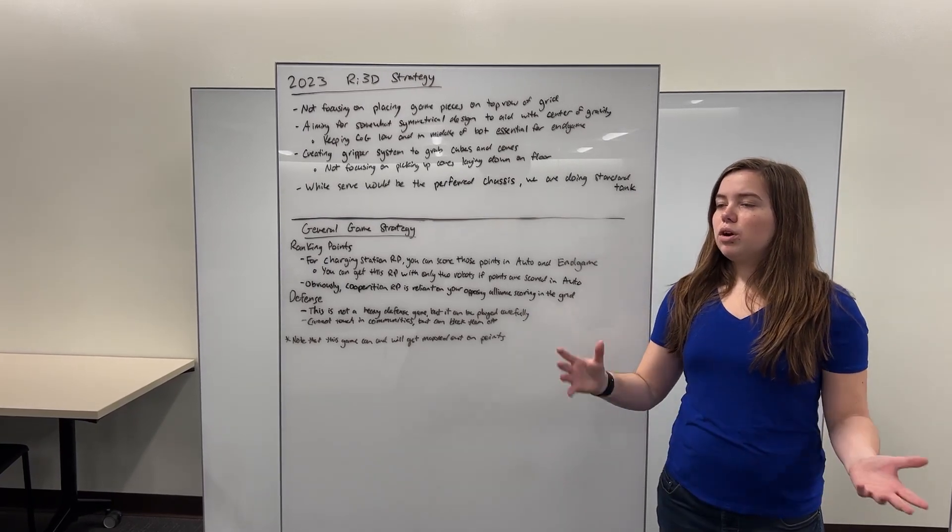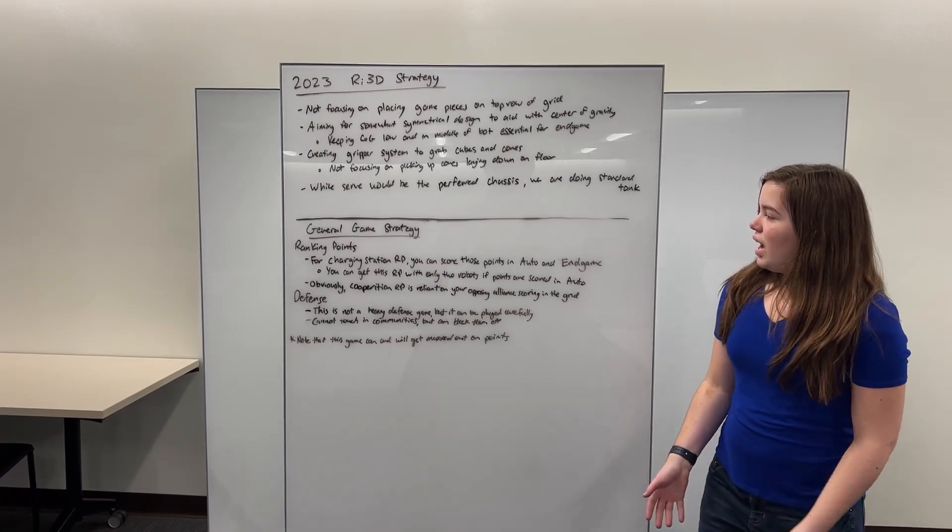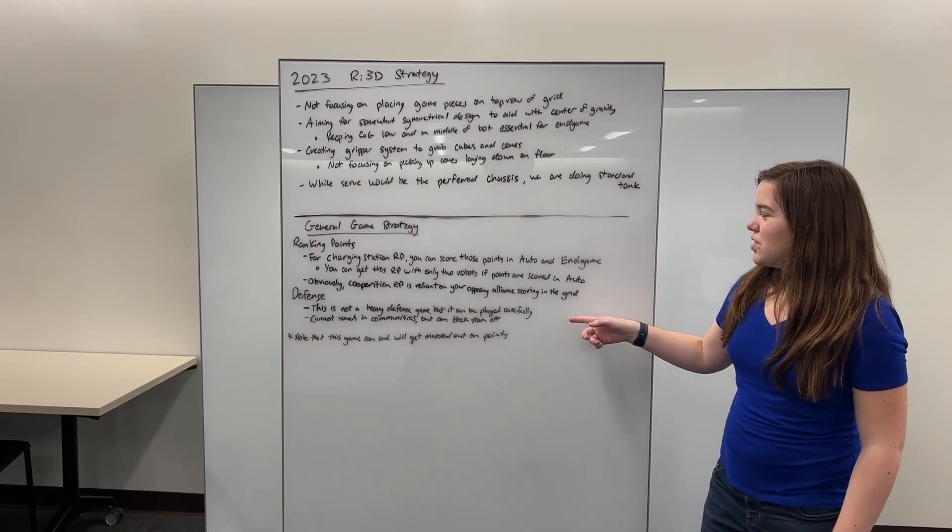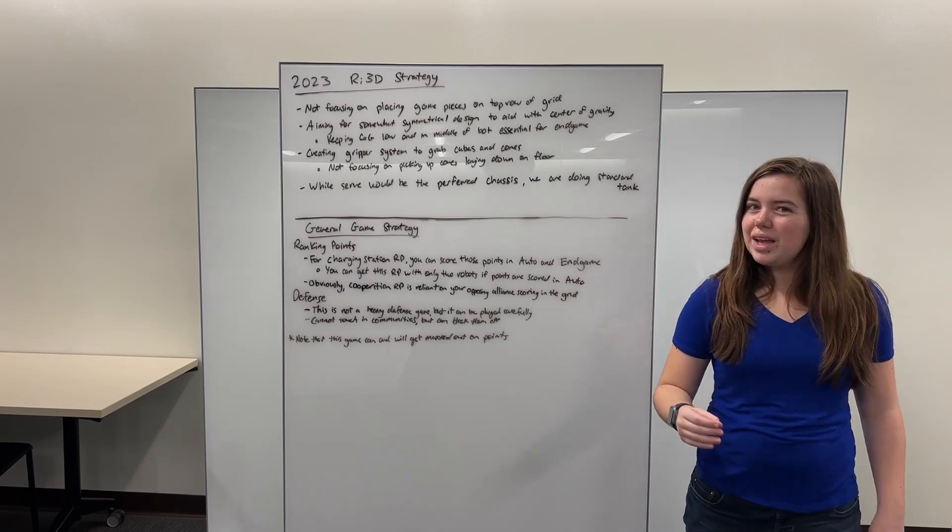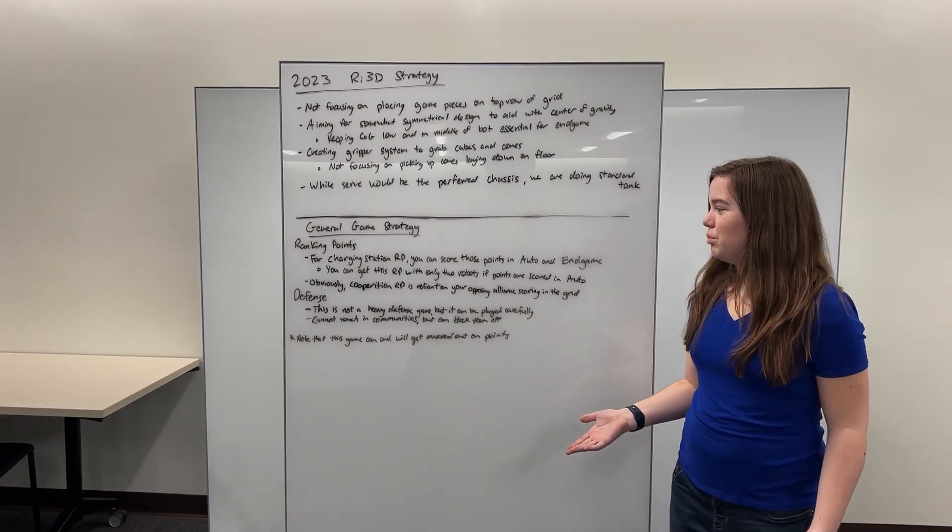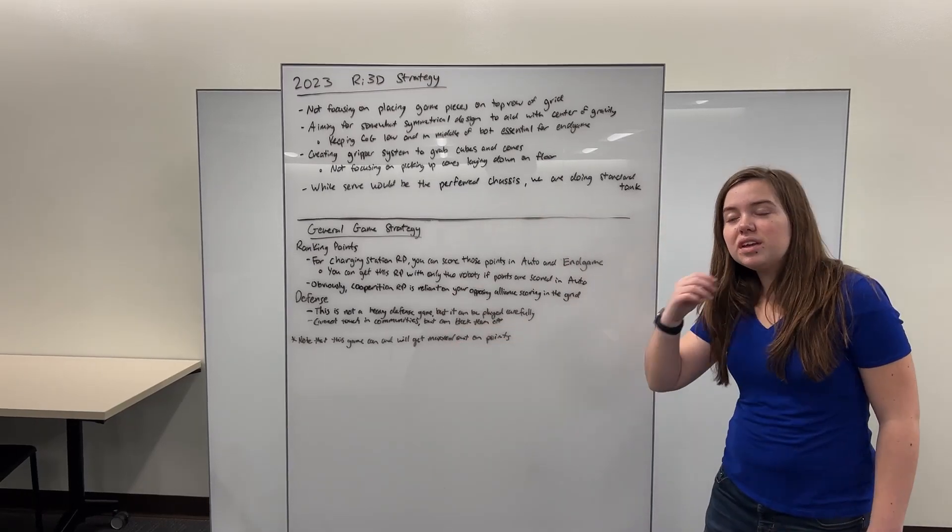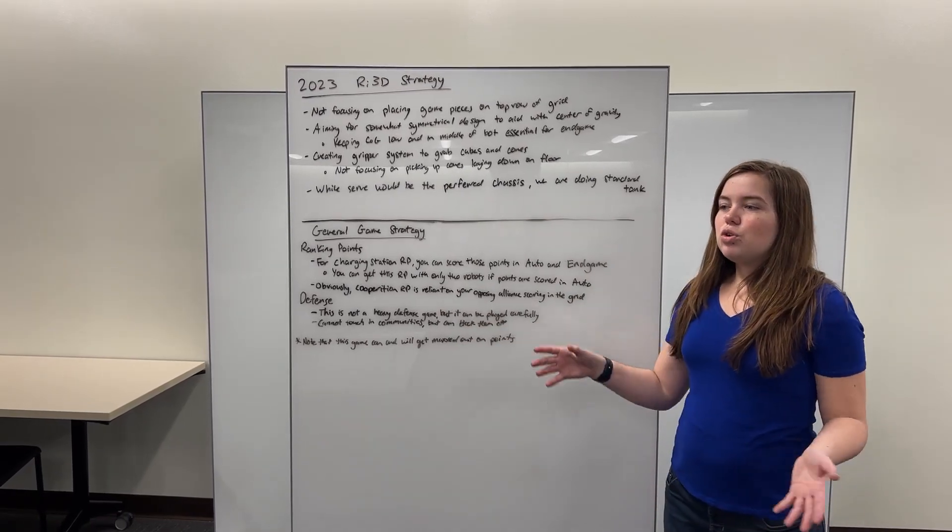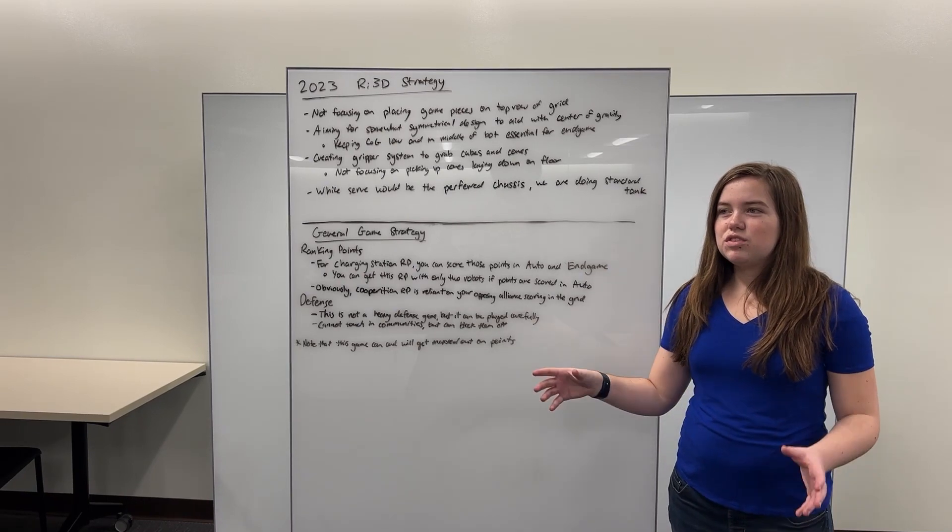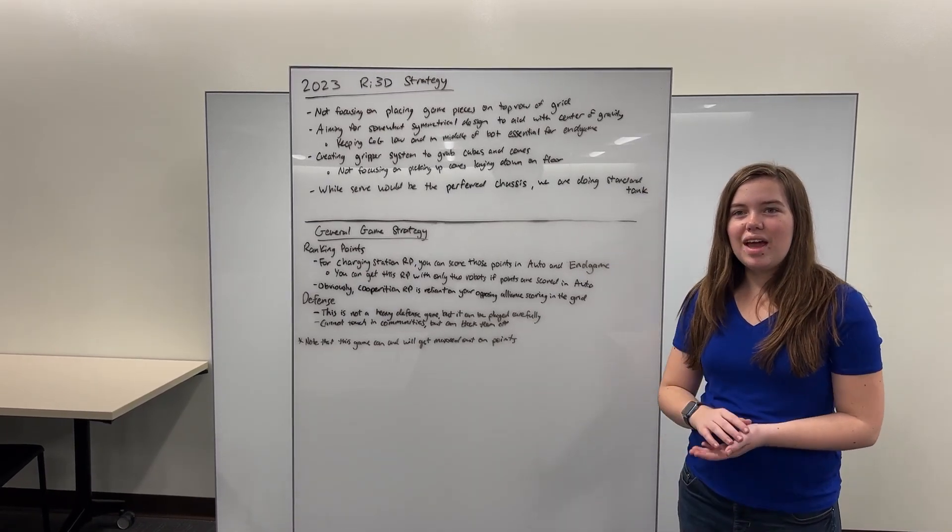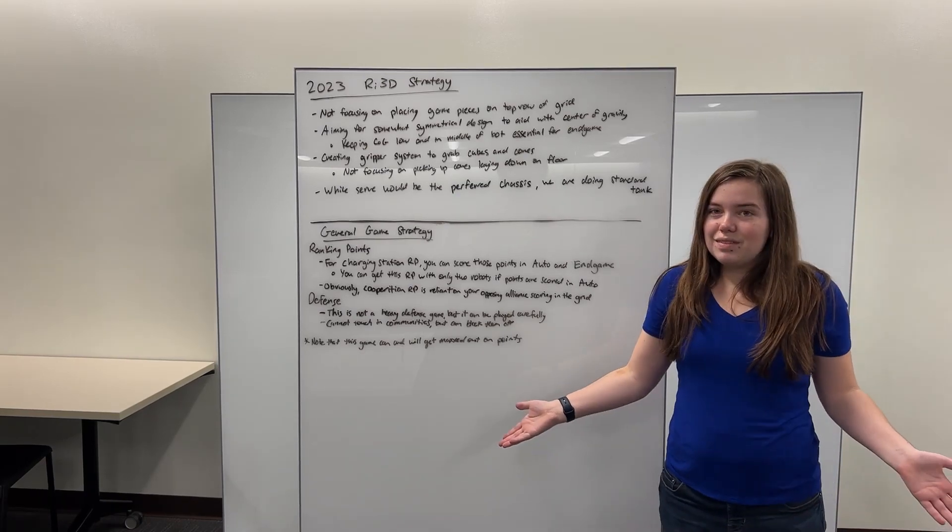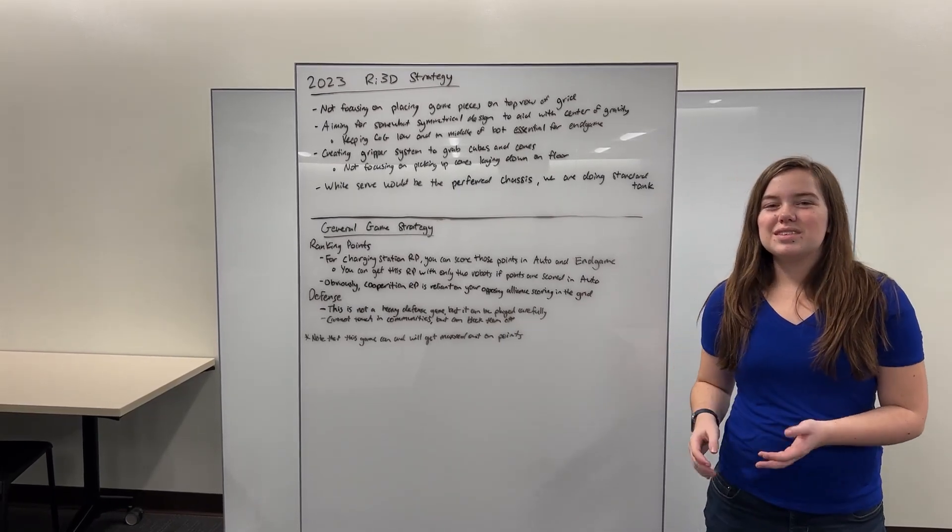And then obviously there's a big topic going around about defense and how limited defense is during this game. But is it really? Because once you think about it, this is not a heavy defensive game, but if you play it carefully you can play a lot of defense very well, especially in the middle area because that's really the only place where you can play it. You cannot touch another robot when it's in its own community, but once it exits it, it's fair game. So if you're able to block off channels or keep them from moving into their favored path between the loading station and their own grid, you could severely reduce the number of points your opponent can score.